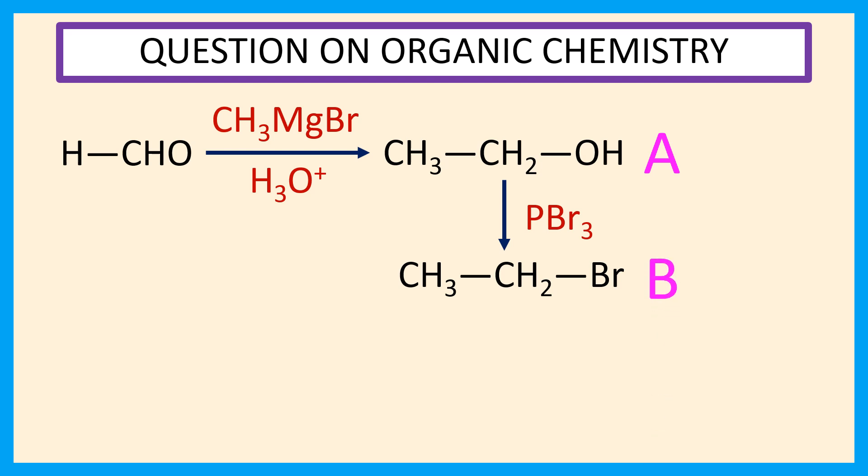Reaction of ethyl bromide with sodium in presence of ether produce CH3CH2CH2CH3 that is N butane. So, our compound C is N butane.